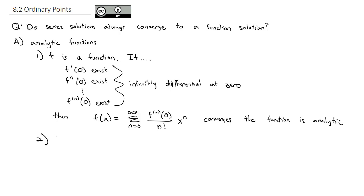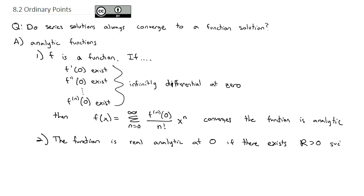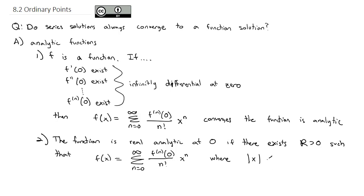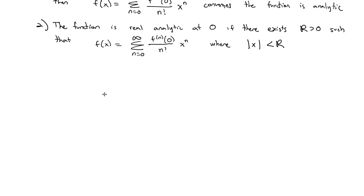To more formally state it: the function is real analytic at 0 if there exists some radius greater than 0 such that f(x) equals the sum as n goes from 0 to infinity of the nth derivative at 0 divided by n factorial times x to the n, where the absolute value of x is less than the radius. In other words, the function equals its Taylor series. For our course, we're going to always be interested in real analytic at 0.